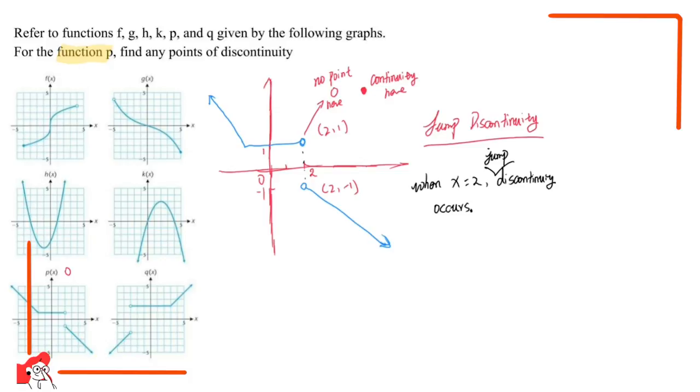Okay, so what we can take away from this question is how to find discontinuity when we look at graphs. If it's a jump discontinuity, it's very straightforward. We just look for the physical gap in between.